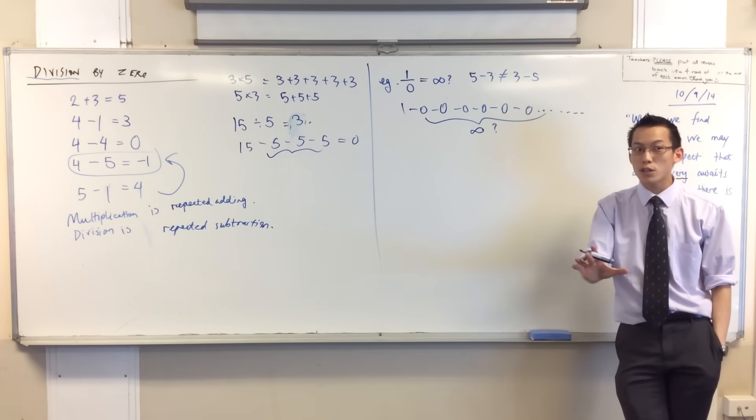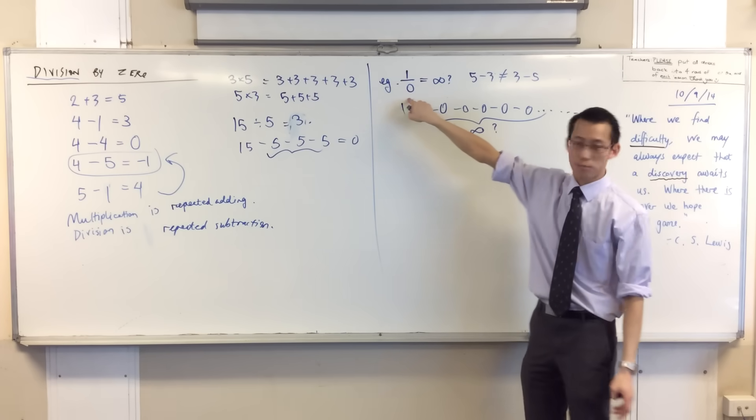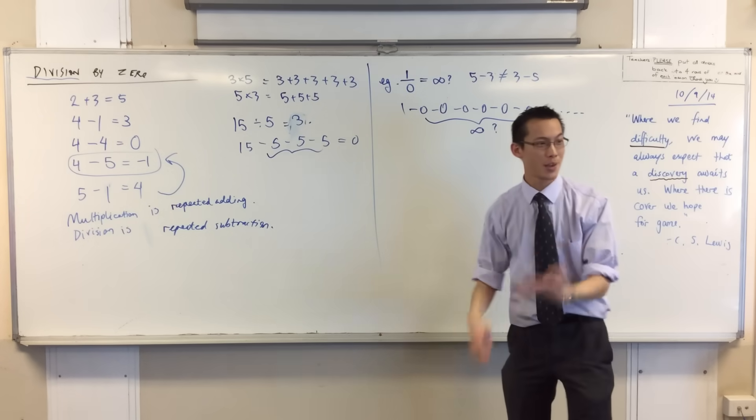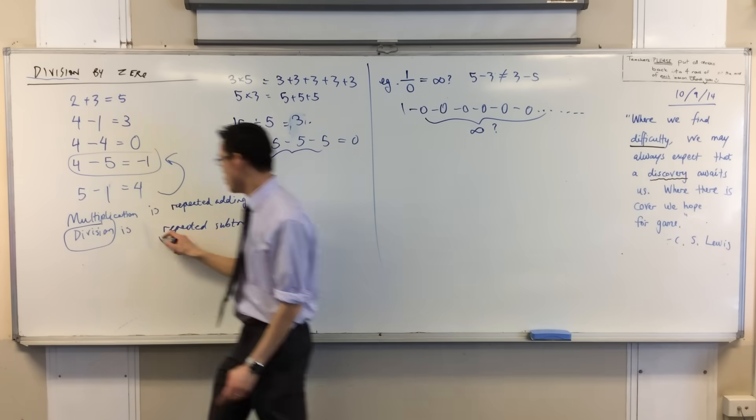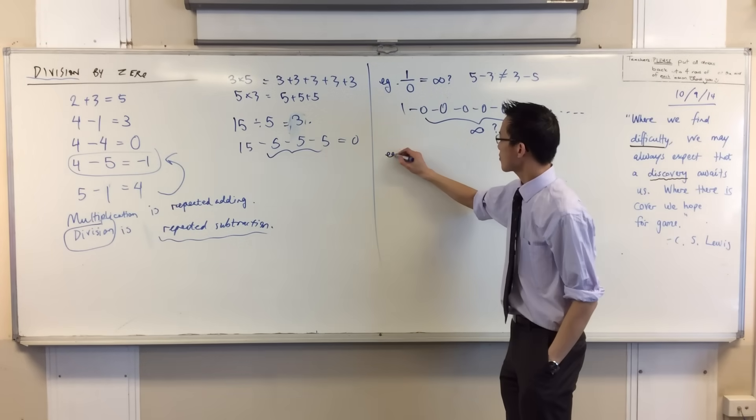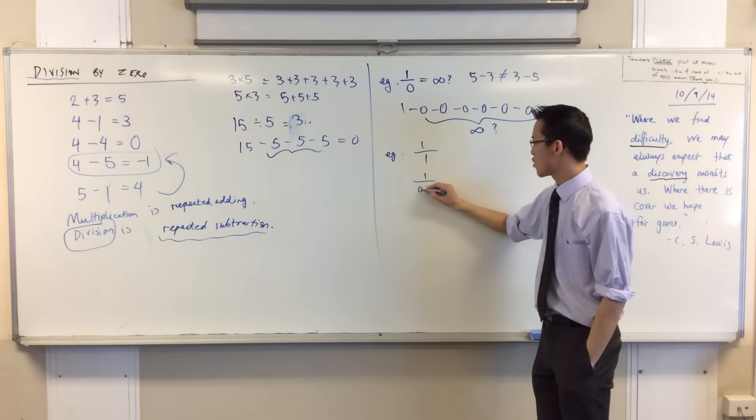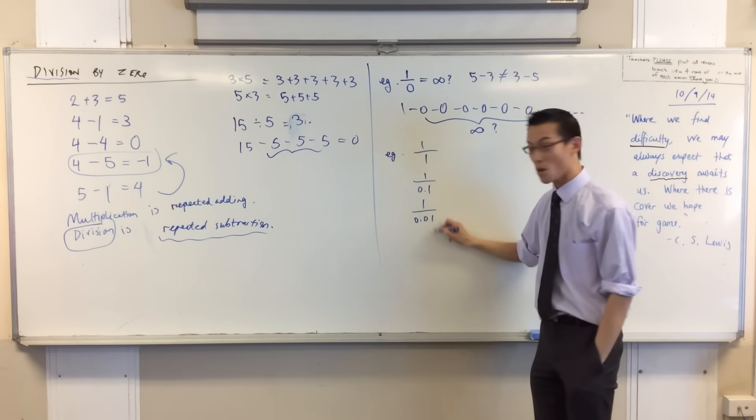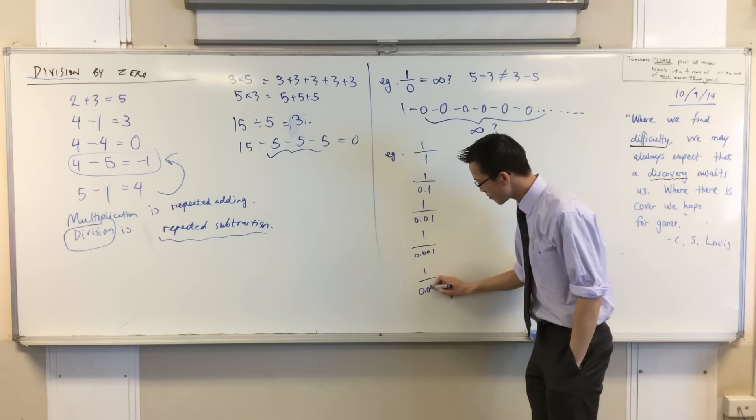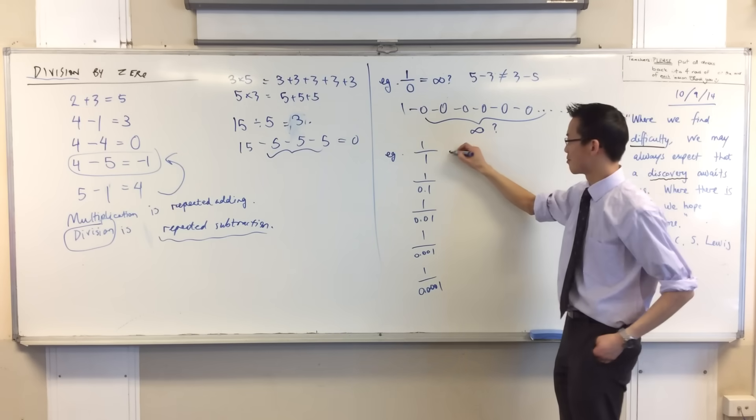Now I'm going to push further on this a little bit. One of the ways that mathematicians solve problems like this is we say, okay, you've got a problem. Here's one way to approach it. Let's approach it another way. Because you guys actually know a lot more about division. You know that it's more than just repeated subtraction. So for instance, let's consider these numbers: one over one, one over 0.1, one over 0.01, and I can keep going.